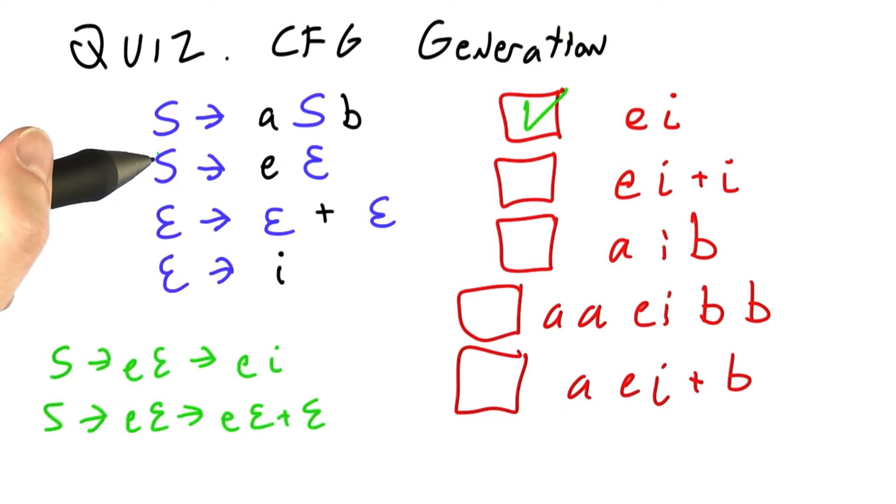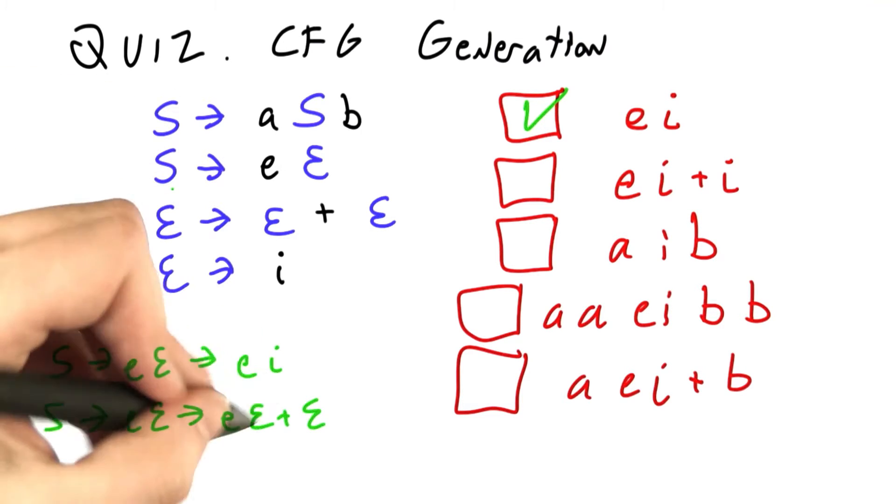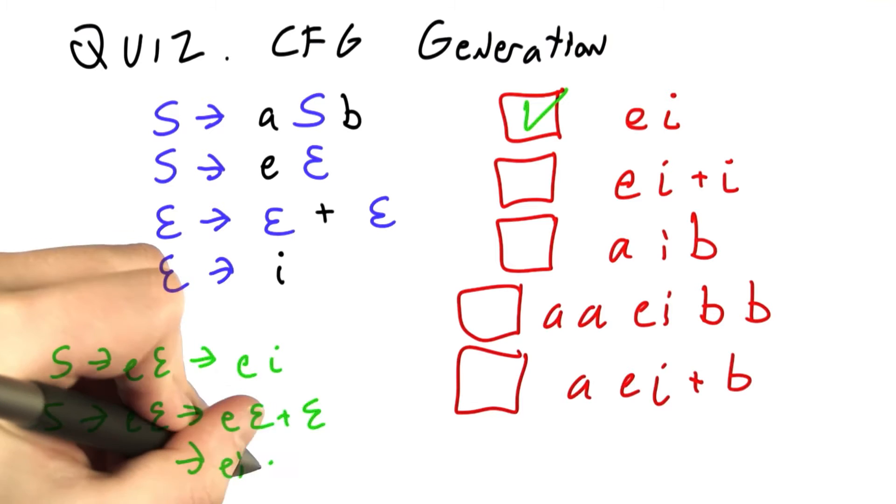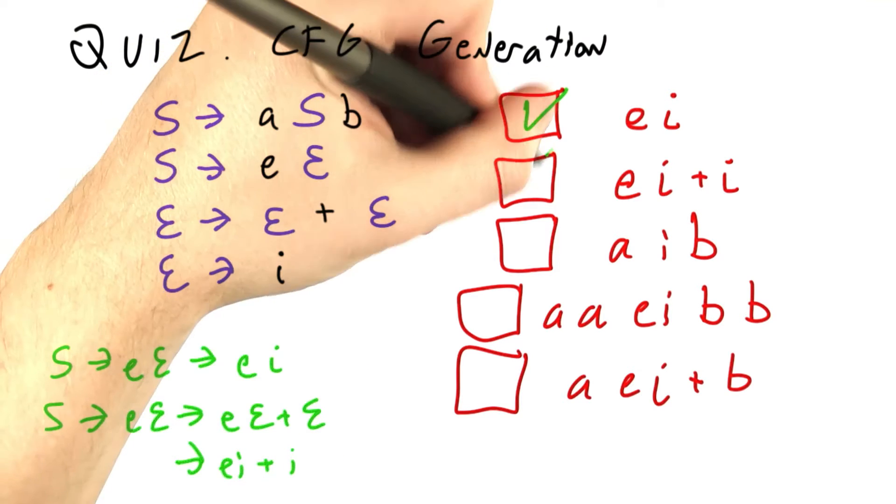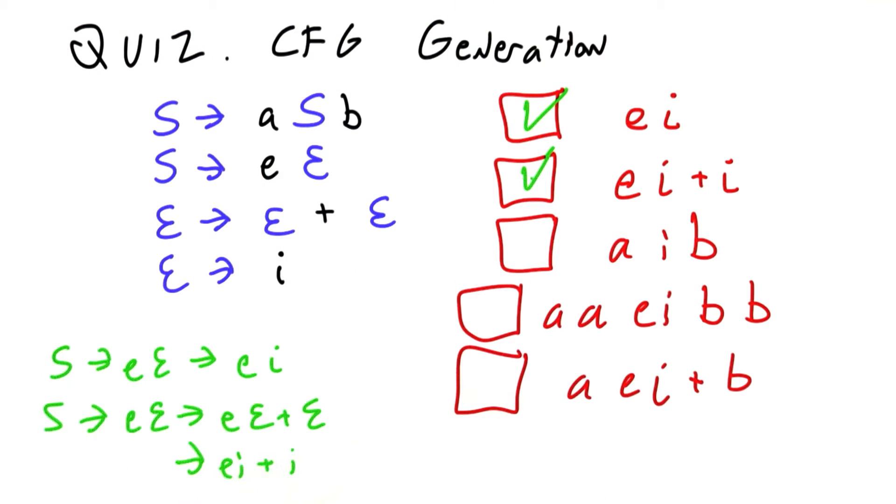I could also have picked Rule 2 followed by Rule 3, and then eventually this will boil down to EI plus I. So this string is also in the language of the grammar.